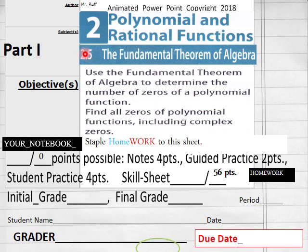Today's homework is 2.5 Part 1, Fundamental Theorem of Algebra. We've got 56 points here on the homework.